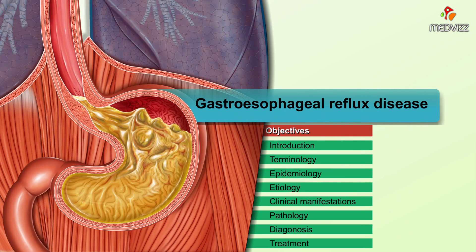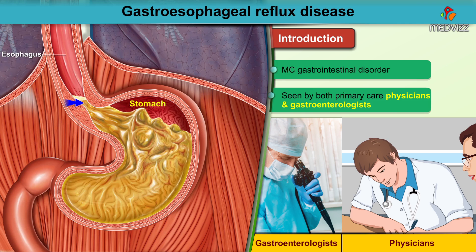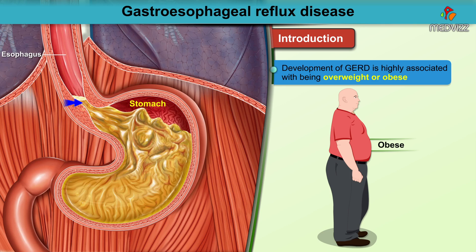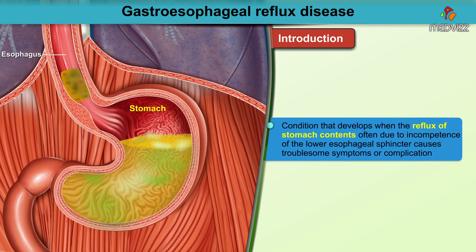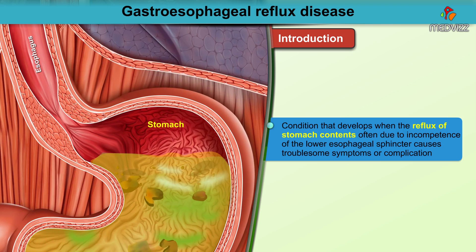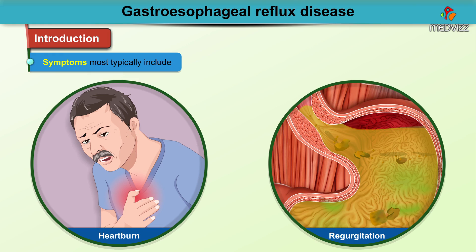Gastroesophageal reflux disease is one of the most common gastrointestinal disorders seen by both primary care physicians and gastroenterologists. It occurs in about 10 to 20% of patients in the Western world. Development of GERD is highly associated with being overweight or obese. GERD is a condition that develops when the reflux of stomach contents causes troublesome symptoms or certain complications, often due to incompetence of the lower esophageal sphincter. Symptoms most typically include heartburn and regurgitation.